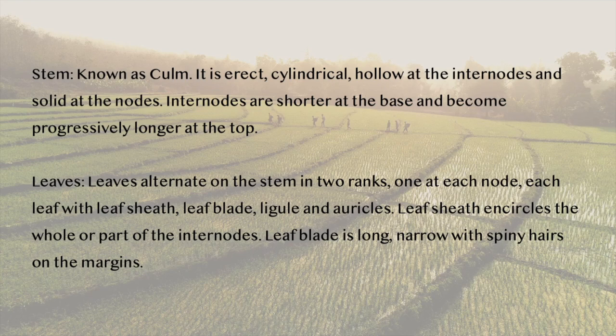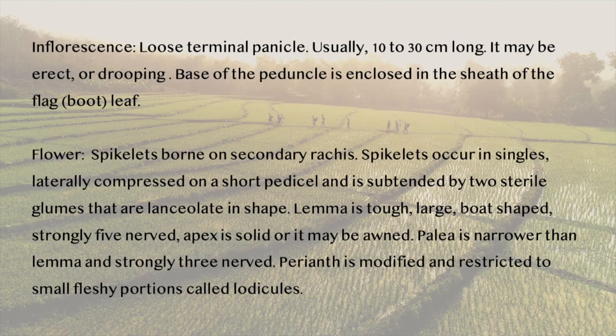Leaves alternate on the stem in two ranks. The leaf sheath encircles the whole or part of the internodes. The leaf blade is long and narrow with spiny hairs on the margins. The inflorescence is a loose terminal panicle which is 10–30 cm long. It may be erect or drooping. The base of the peduncle is enclosed in the sheath of the flag leaf.